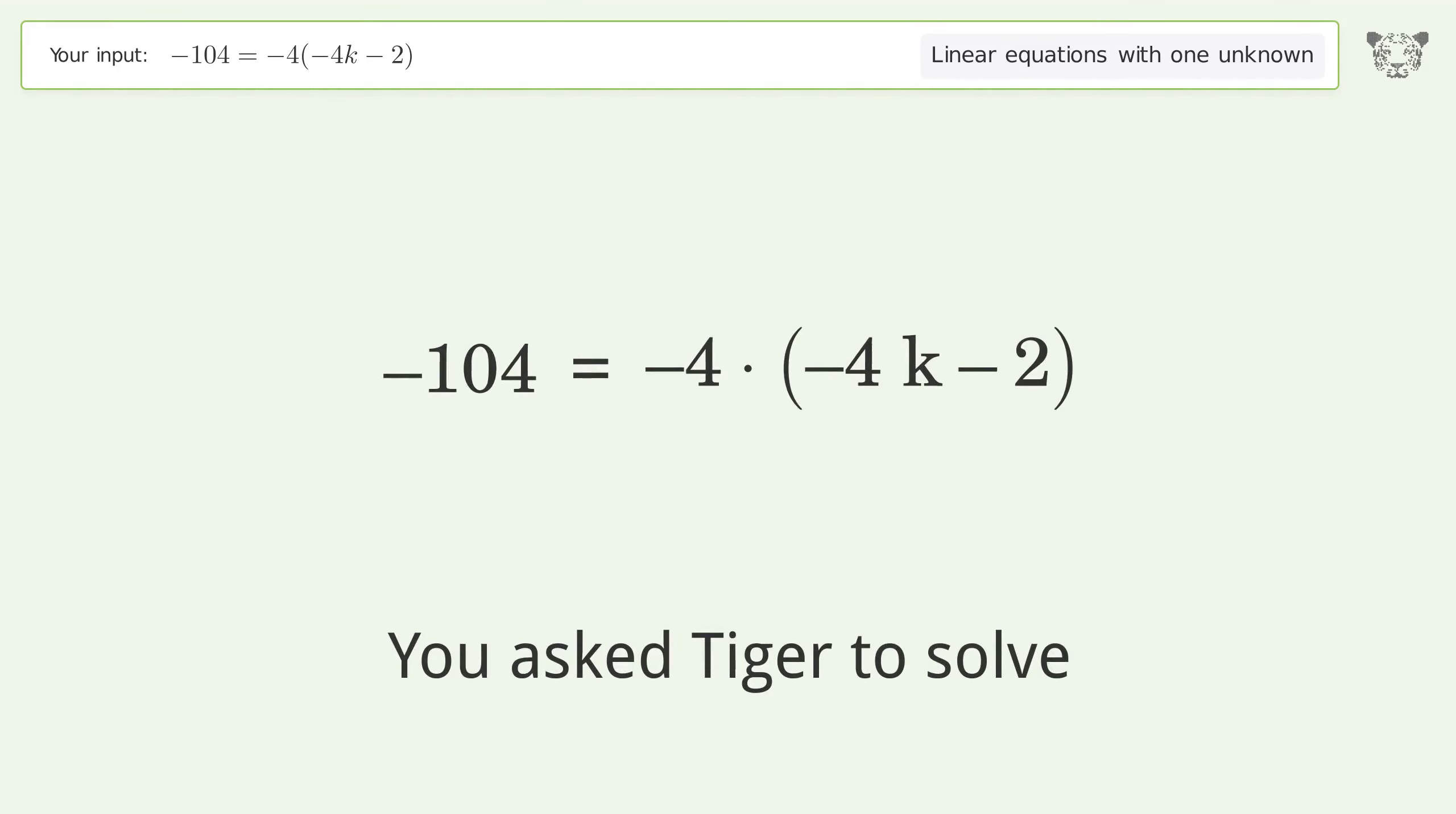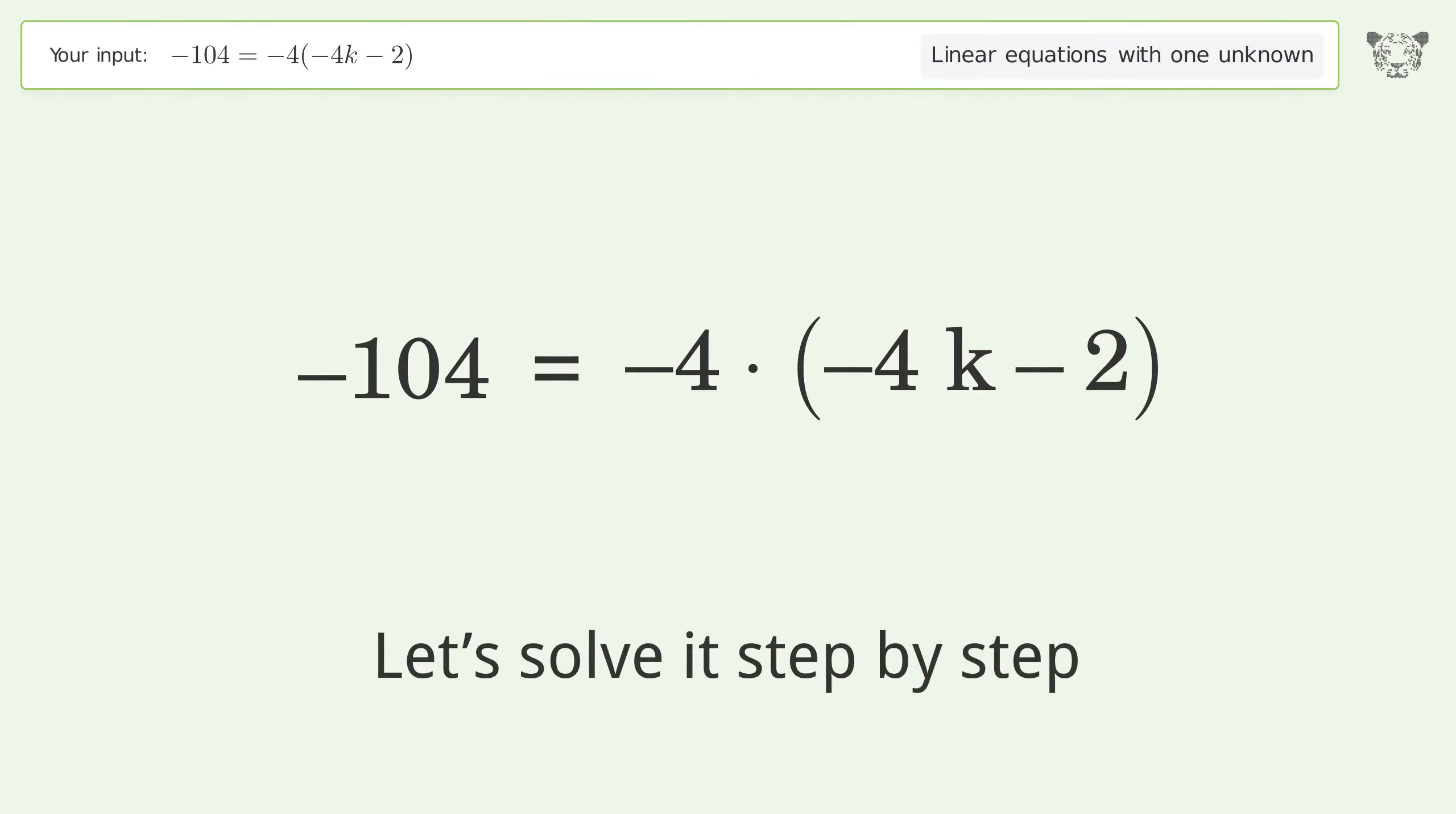You asked Tiger to solve this problem dealing with linear equations with one unknown. The final result is k equals negative 7. Let's solve it step by step. Simplify the expression and expand the parentheses.